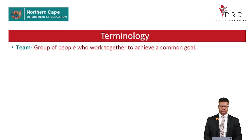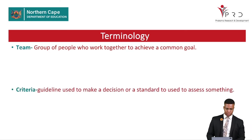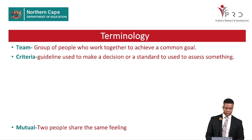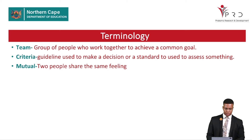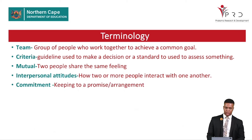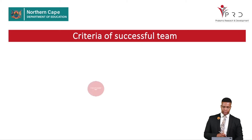Important terminology for this lesson: 'criteria' refers to guidelines used to make a decision or a standard used to assess something. 'Mutual' refers to two people who share the same feeling. 'Interpersonal attitudes' refers to how two or more people interact with one another. 'Commitment' refers to keeping to a promise or an arrangement. 'Cooperation or collaboration' refers to willingness to cooperate in a team to achieve objectives.